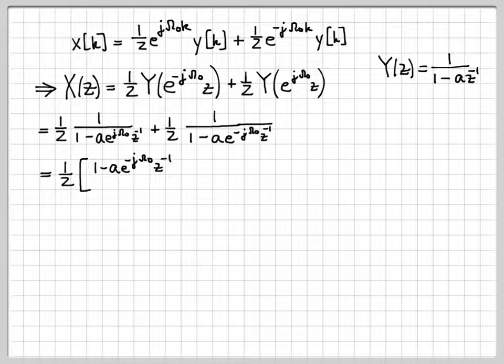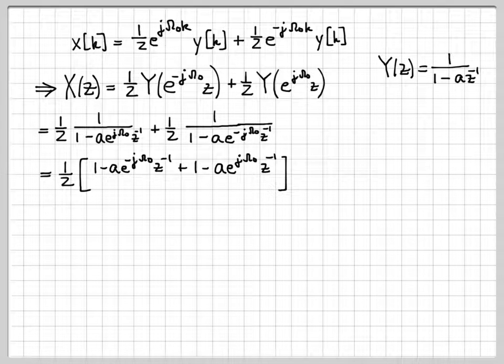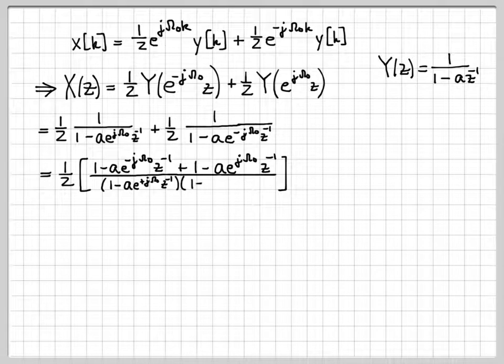That means I'm going to put a (1 - ae^(-jω₀)z^(-1)) there, and add (1 - ae^(jω₀)z^(-1)) there. Then the denominator is now the product of my previous denominators. I'm just getting a common denominator.